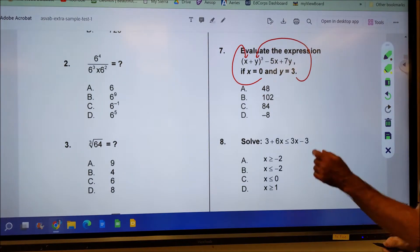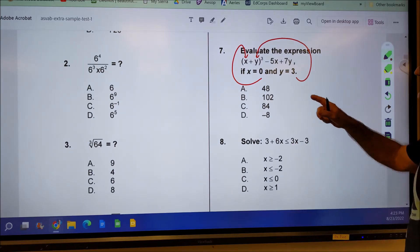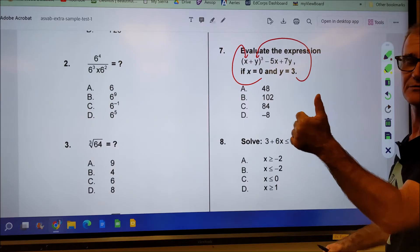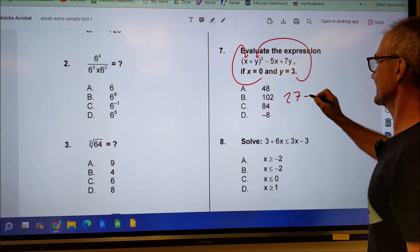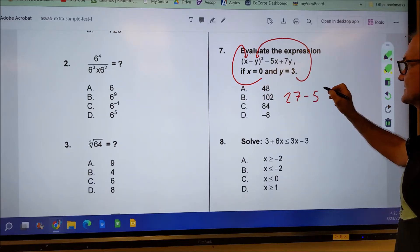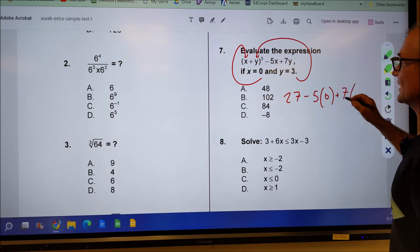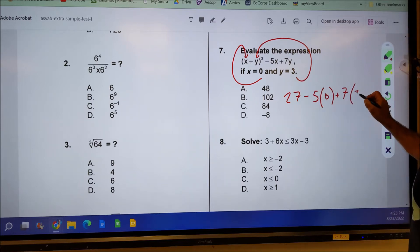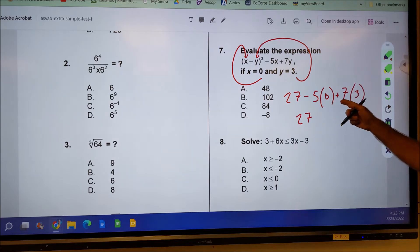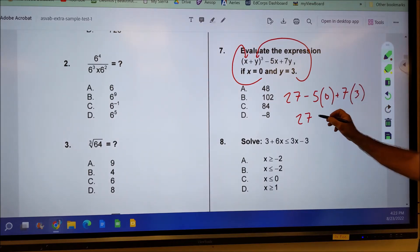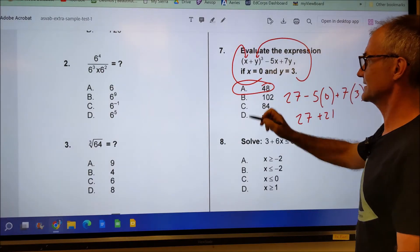So zero plus three parentheses before exponents is three. Three to the third power is three, nine, 27. So I have 27 minus 5 times X. Well, X is zero plus 7 times Y and Y is three. So 27, 5 times zero plus 21 is going to give me 48. There's my answer, answer A.